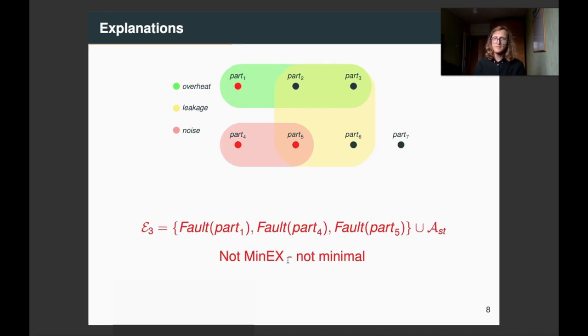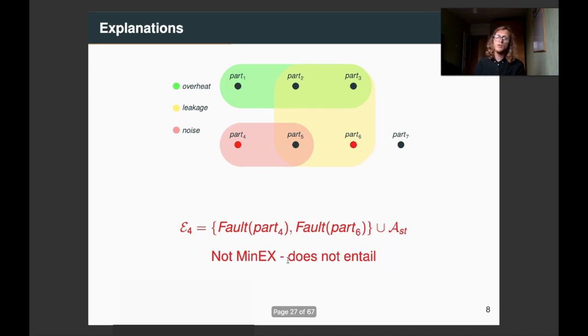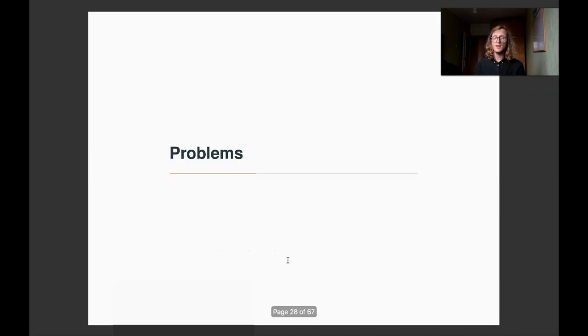On the other hand, if an explanation is not minimal, it's not a min-ex. For example, here, part four can be removed. And some, of course, subsets just don't cover all of their failures. Like in this case, overheat is not explained.